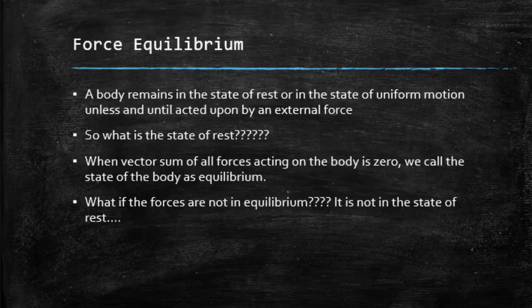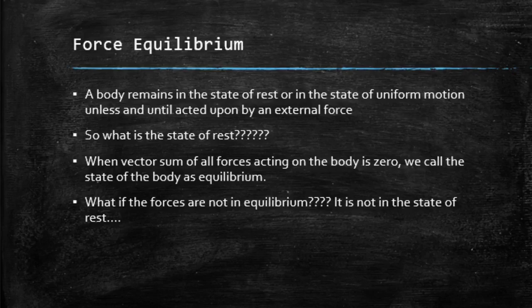A body remains in the state of rest or in the state of uniform motion unless and until acted upon by an external force. This law is the first law of motion of Newton. What is the state of rest? When the vector sum of all the forces acting on the body is zero, we call that as the state of the body of equilibrium. What if the forces are not in equilibrium or they are not zero? Then it is not in the state of rest.